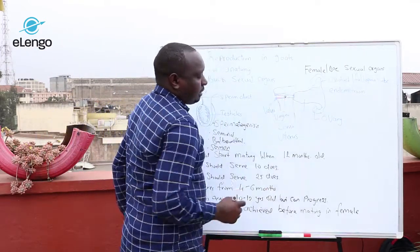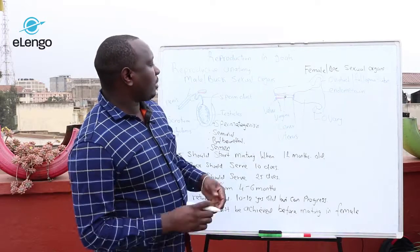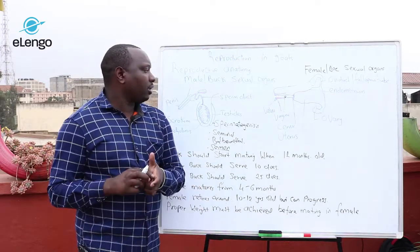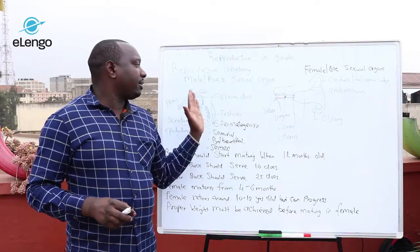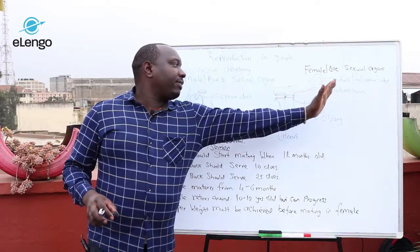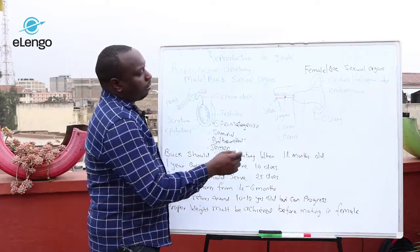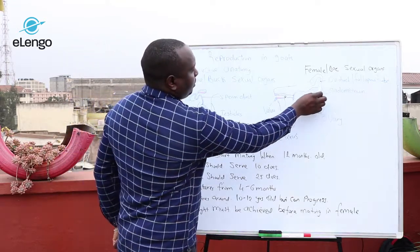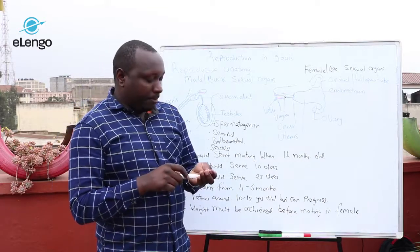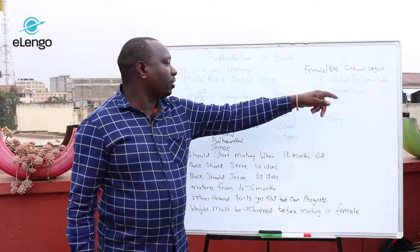From here, the vagina contains contractile muscles which propel the sperm towards the uterus, and the sperm moves to the oviduct. Now let's look at the female sexual organ.